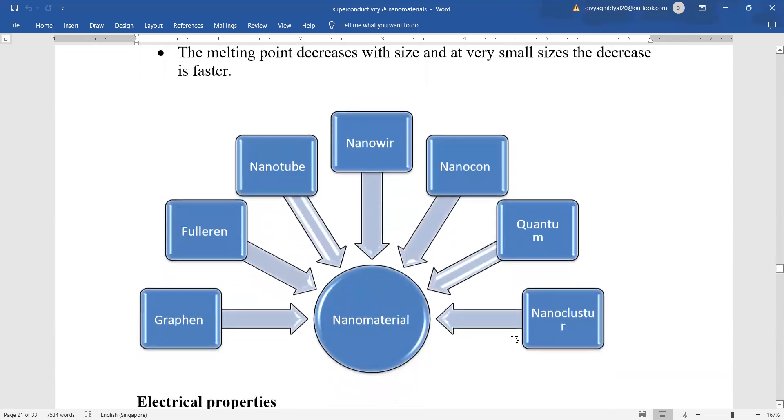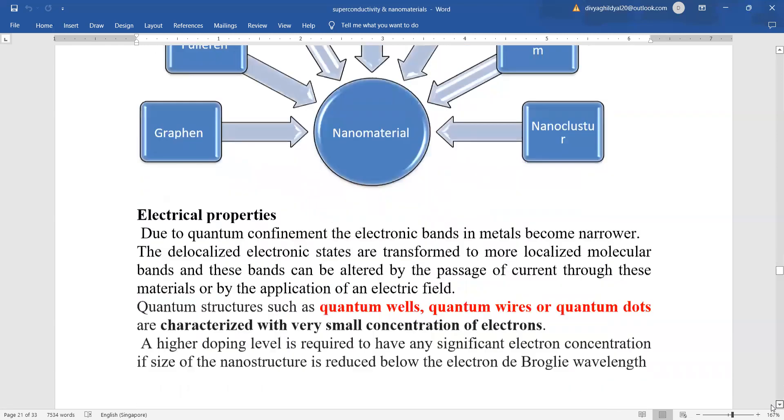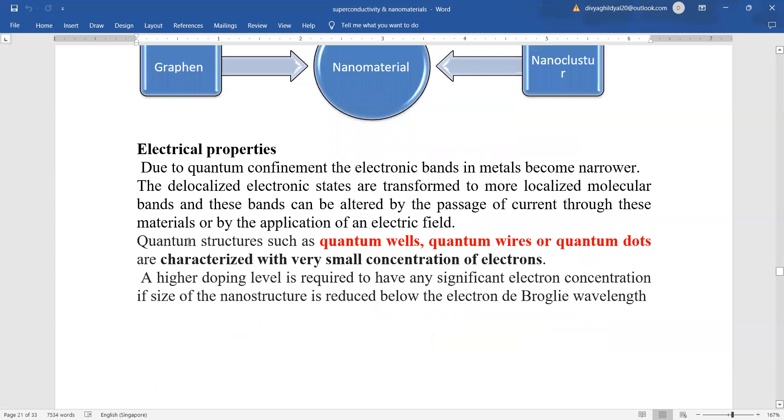Many nanomaterials, you must have heard about nanotubes, nanowires, quantums, nanoclusters, graphene, buckminster fullerenes, buckyballs, etc. In your syllabus, firstly, you are having the quantum category of nanomones: the quantum well, quantum wire and quantum dot. We will study in the next lecture.